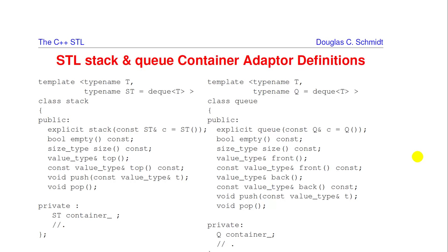The queue interface is a bit quirky — the operations to add items to the end and remove from the front are also called push and pop, which doesn't feel intuitive. Operations like enqueue and dequeue or get and put would make more sense, but that's what we have. The implementation also uses a deque by default.